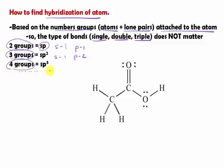When we have four groups, of course, s is going to have one, and the rest is going to be p. So, in this case, that's why we have sp³.